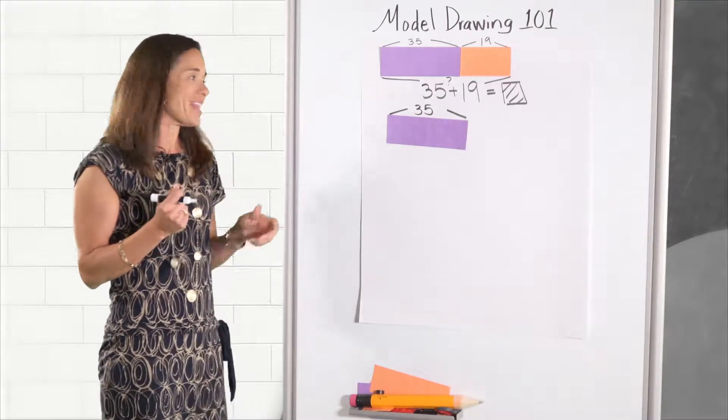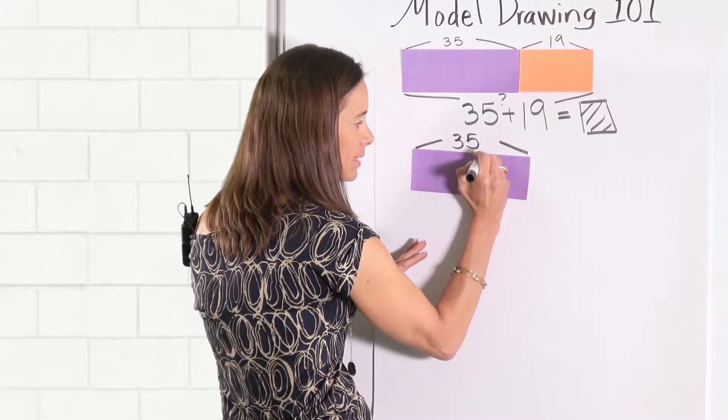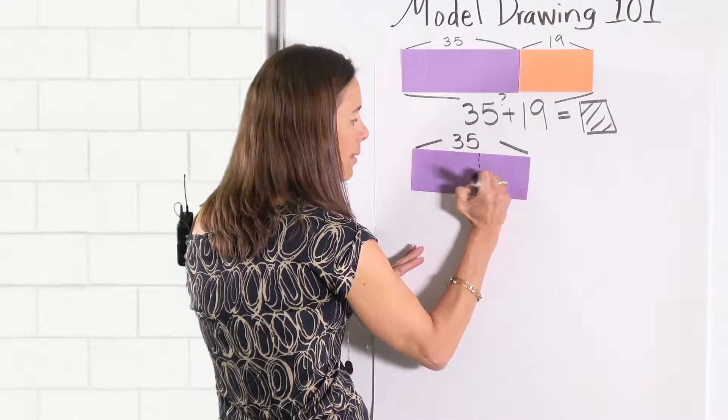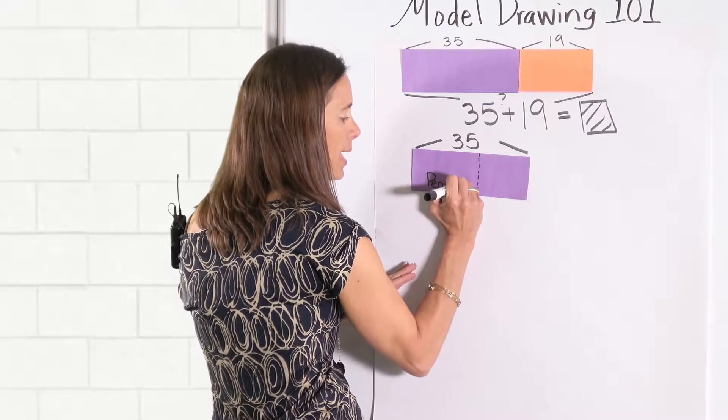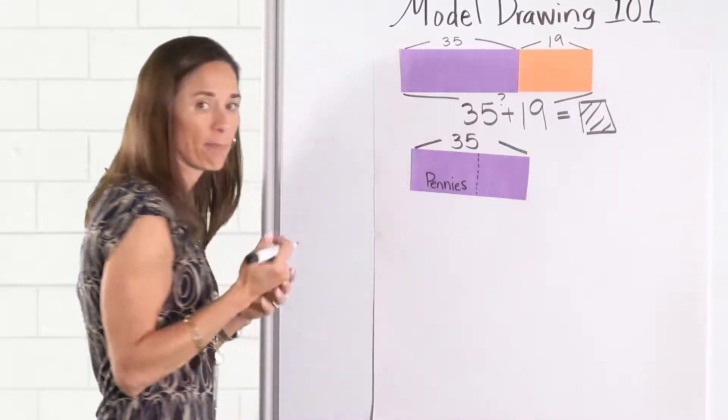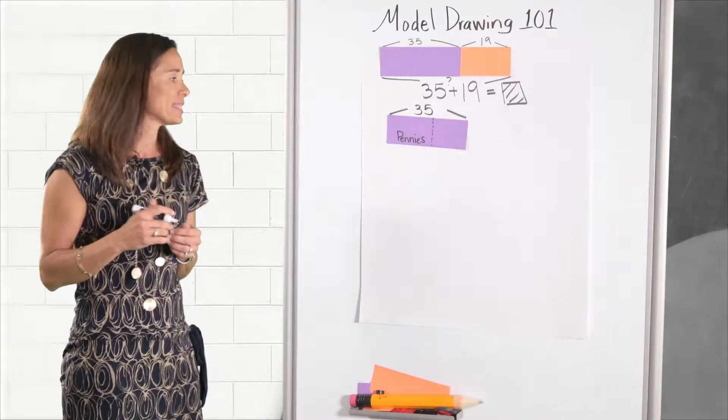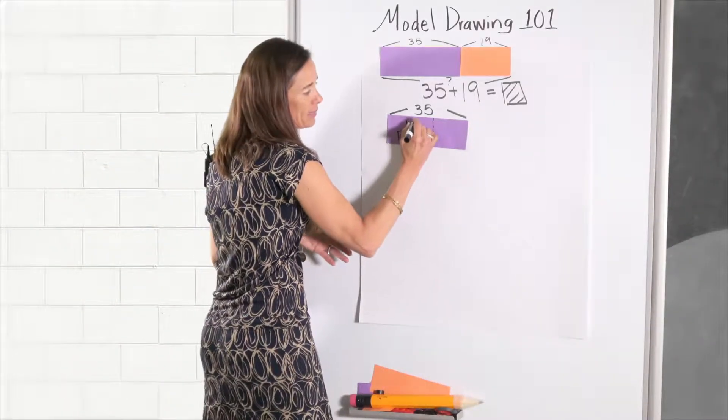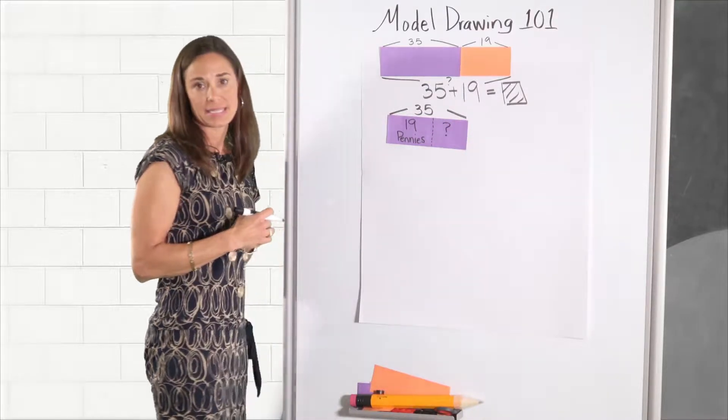We know that 19, so again that proportional reasoning, 19 would represent the pennies. So I'm just going to write pennies. Kids might just put a P in there. We know that this represents the pennies and this amount is 19. So we're looking for the amount that represents the quarters.